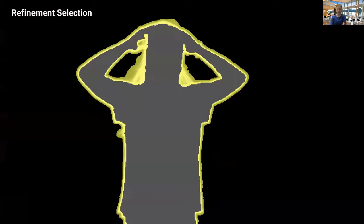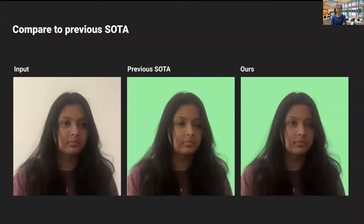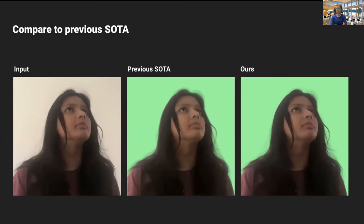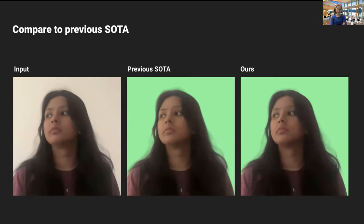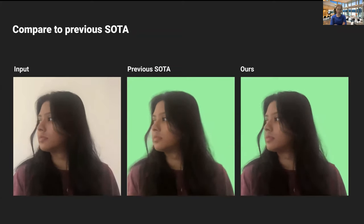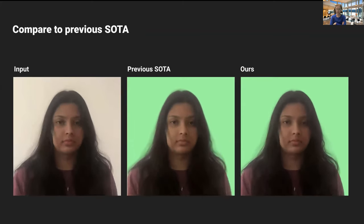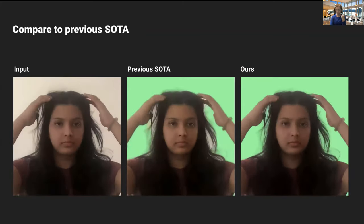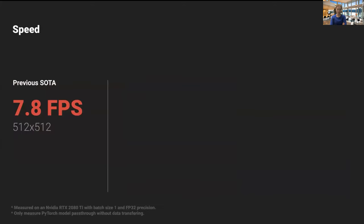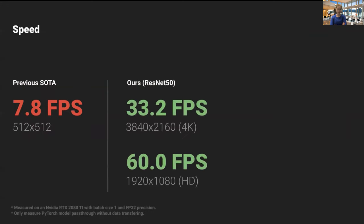So here's the coarse alpha. And then the error map. And here's the refined alpha. Here's a comparison to previous state of the art, which is background matting, the paper that I described in the beginning. You can see that although it's pretty good with hair, it still created little artifacts when she moves and there's really thin strands while the new work improves over that. So background matting was 7.8 FPS on 512 by 512 resolution. This current network is 33 FPS on 4K, 60 FPS on HD. And if we use instead of ResNet for features MobileNet, we can even get 200 frames per second for HD resolution.